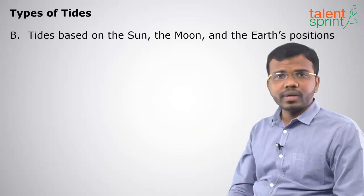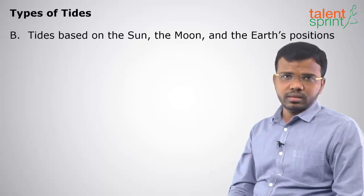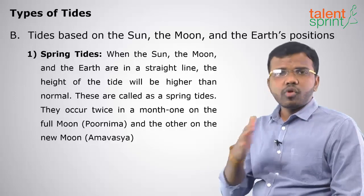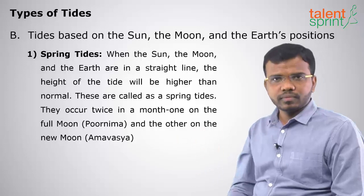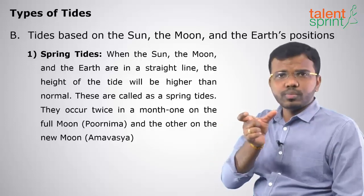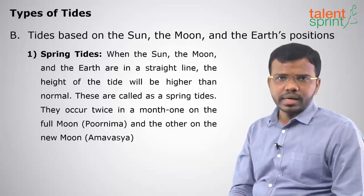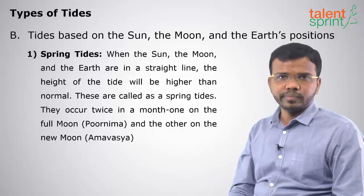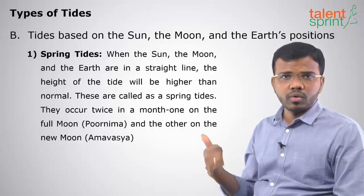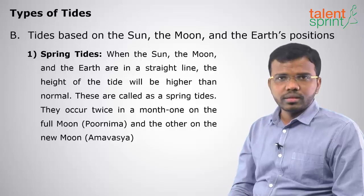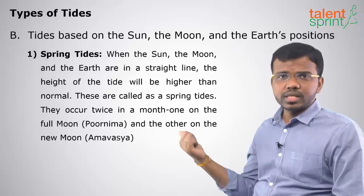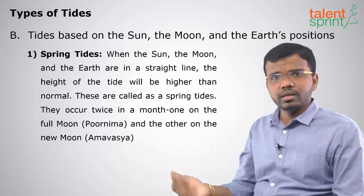The next classification of tides is based on the position of the sun, moon and earth. First, we have spring tides. When the earth, moon and sun are in a straight line — sometimes moon is in the middle of sun and earth, sometimes earth is in the middle of sun and moon — we get spring tides. This happens only on full moon (Purnima) and new moon (Amavasya), which are 15 days apart. So spring tides occur twice a month.